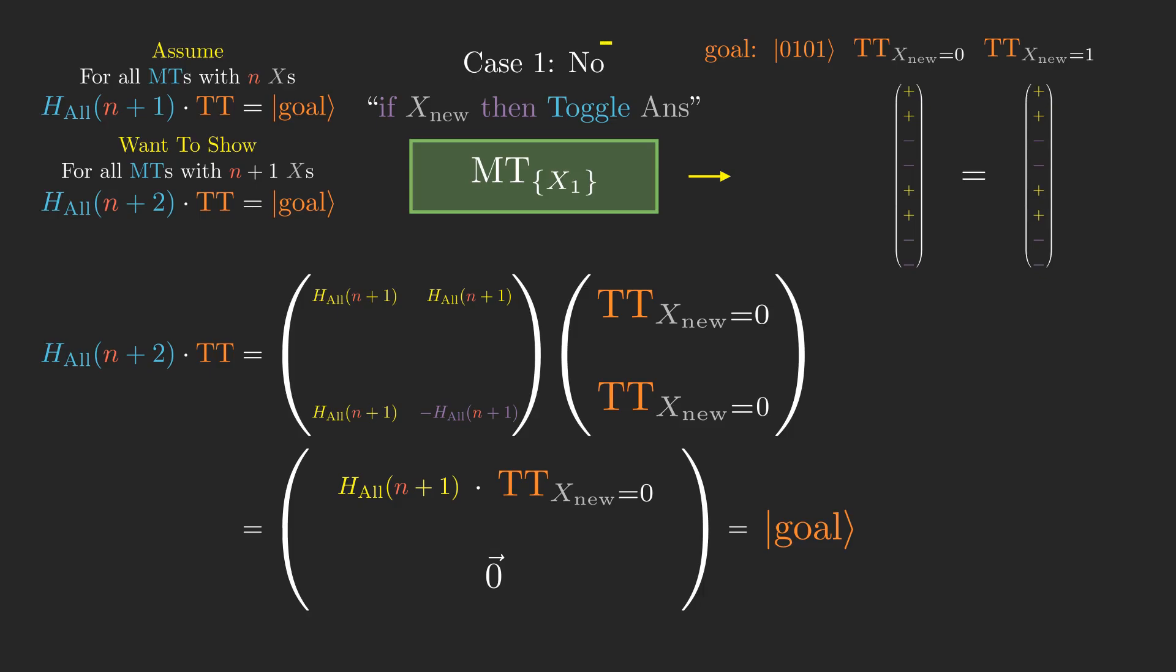The second case is where there is a line that says if x new then toggle answer. The steps of the proof in this case are very similar, but a few things get flipped around.